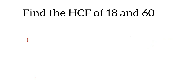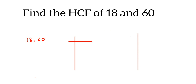For 18 and 60, we're going to use the prime factorization method. We're going to use only prime numbers and do division using prime numbers. First we're going to have 18 and 60 — remember, take only prime numbers.